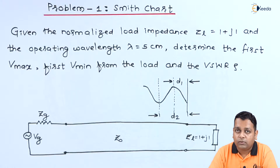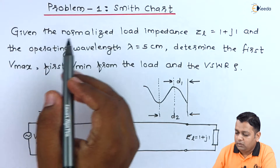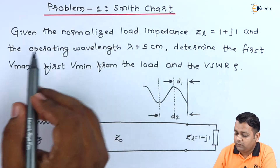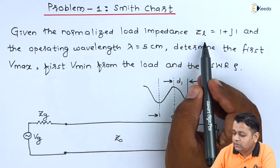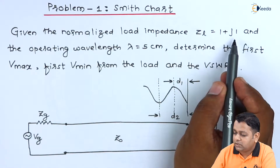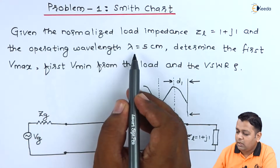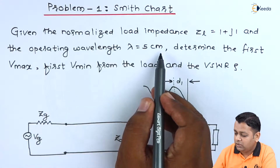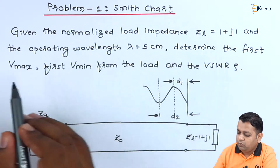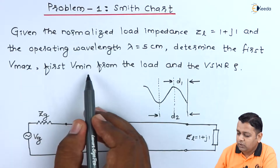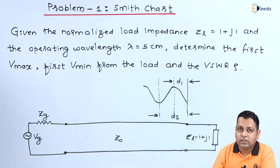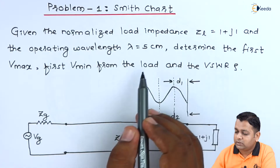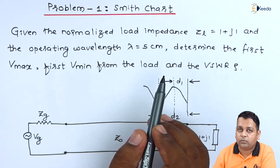Here we are provided a problem statement that makes use of the Smith chart. Given the normalized load impedance Z_L equal to 1 plus J1, and the operating wavelength lambda equal to 5 centimeters, determine the first Vmax, the first Vmin from the load, and the VSWR rho. A schematic diagram is also given to accompany the various details in the problem statement.